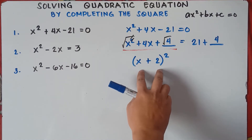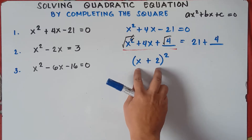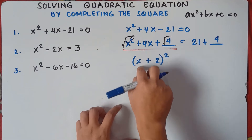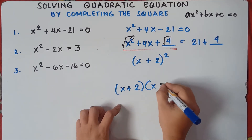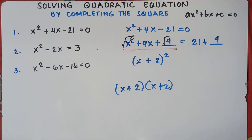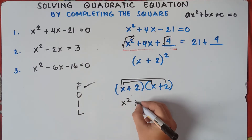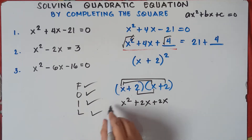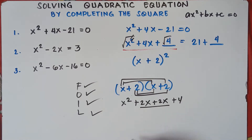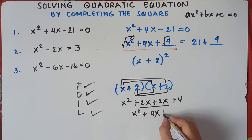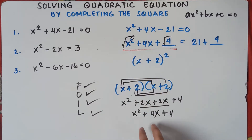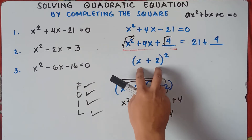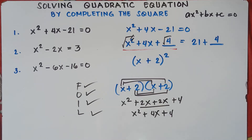Let's check this: x plus 2, quantity squared, means we multiply x plus 2 by itself twice. Using the FOIL method — First, Outer, Inner, Last — x times x is x squared; x times positive 2 is positive 2x; 2 times x is positive 2x; positive 2 times positive 2 is positive 4. Combining like terms gives x squared plus 4x plus 4 — the same answer. So x plus 2 quantity squared is the correct factored form, though it takes time to verify by factoring.